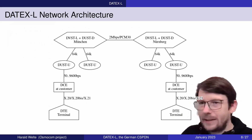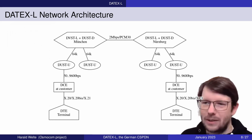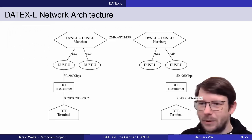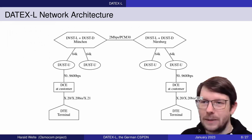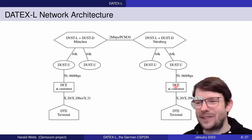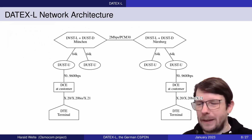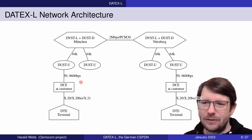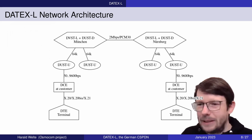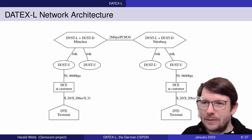In 1975, when DATEX-L with this technology was deployed, they already had call setup times below 500 milliseconds. So if you established a channel to any other subscriber in Germany — assuming the line is free — in less than half a second, the connection was fully set up and you could exchange data at 50 to 9600 BPS in a transparent way with the peer. For the time, I think it's quite an achievement.